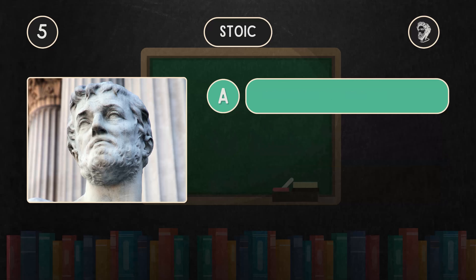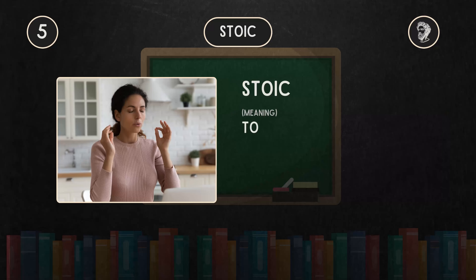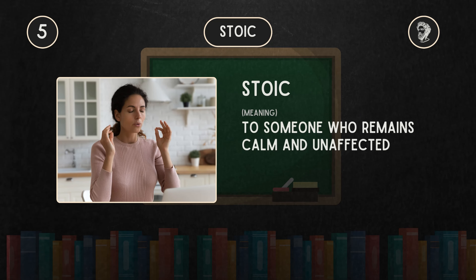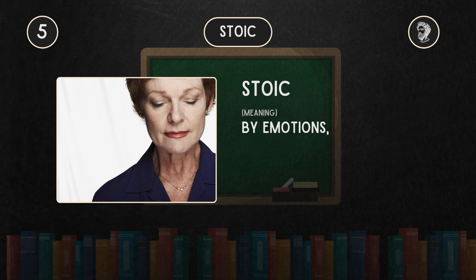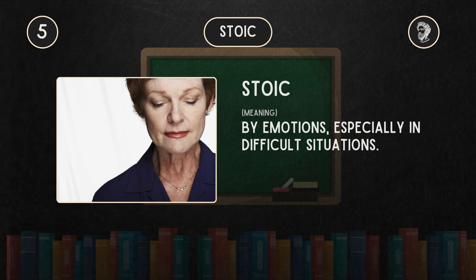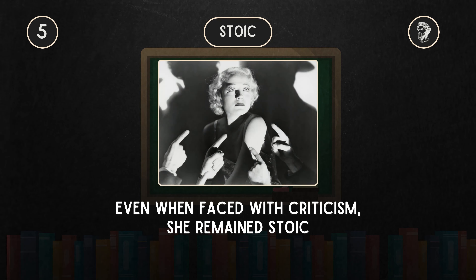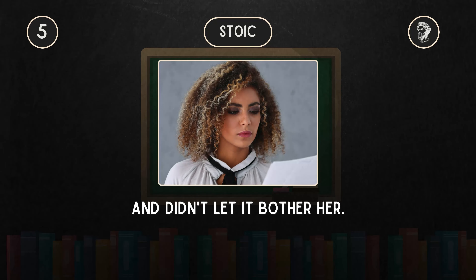A. Unemotional and reserved. Stoic refers to someone who remains calm and unaffected by emotions, especially in difficult situations. For example, even when faced with criticism, she remained stoic and didn't let it bother her.